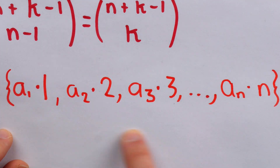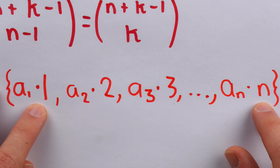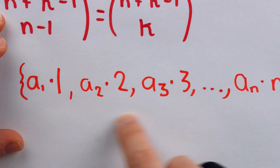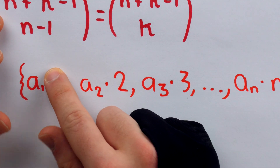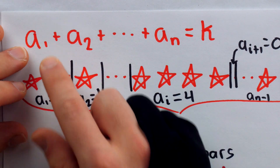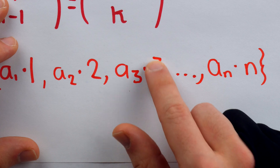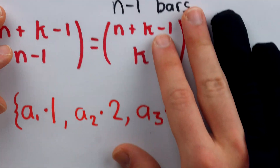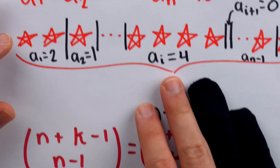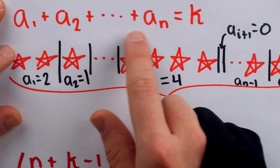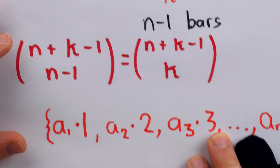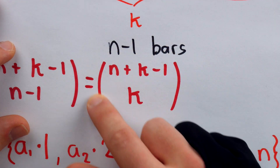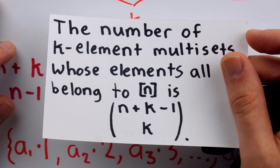Conversely, given a k-element multiset of {1,...,n}, we can translate it into a non-negative integer solution: if the multiset has 6 copies of 1, set a1 = 6; if it has 4 copies of 3, set a3 = 4, and so on. From solutions we can build multisets, and from multisets we can build solutions. Since they correspond exactly, the number of multisets equals the number of non-negative integer solutions, which we found to be n + k − 1 choose k — agreeing with the theorem.